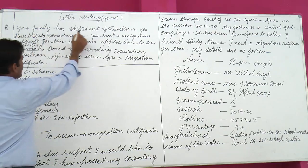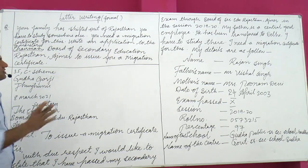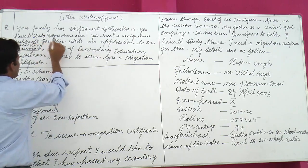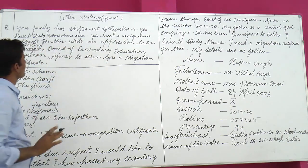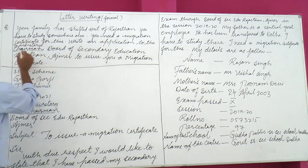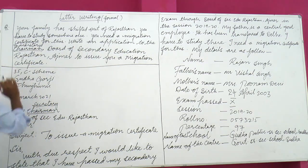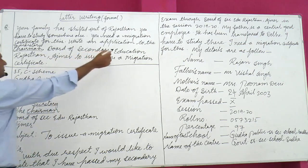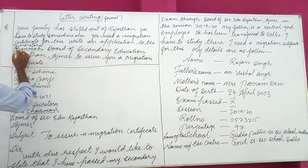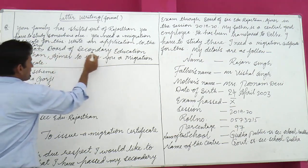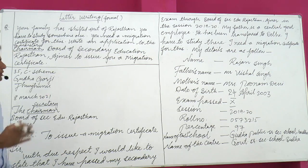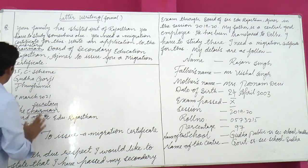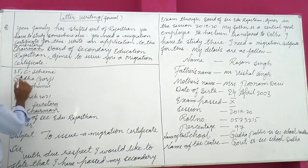To repeat: your family has shifted out of Rajasthan, you have to study somewhere else, you need a migration certificate for this. Write an application to the Secretary or Chairman — both can appear in the question — of the Board of Secondary Education, Rajasthan, Ajmer, for the purpose: to issue a migration certificate.